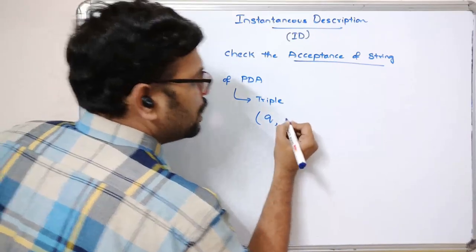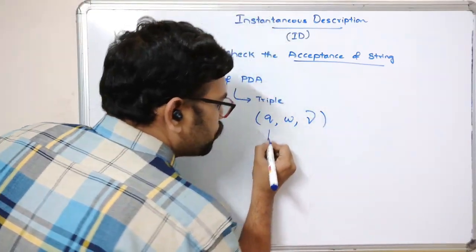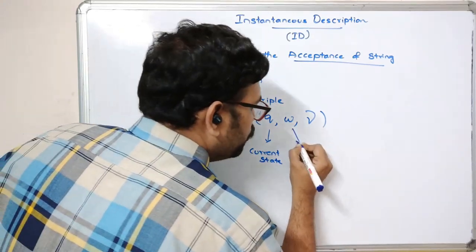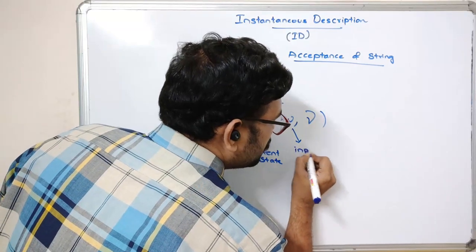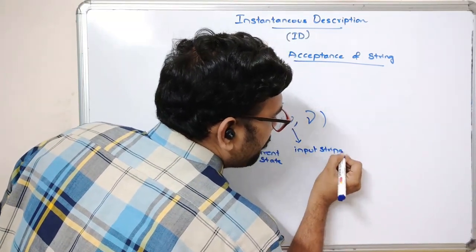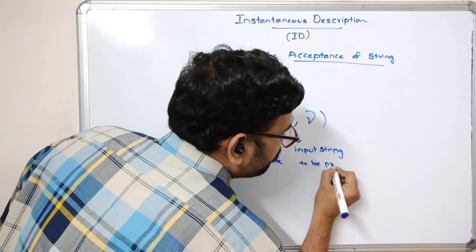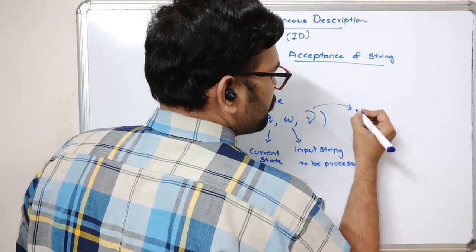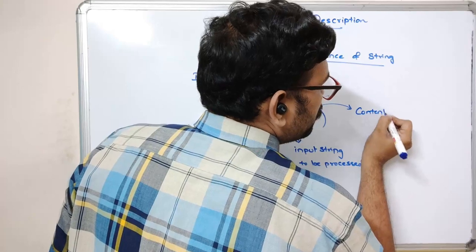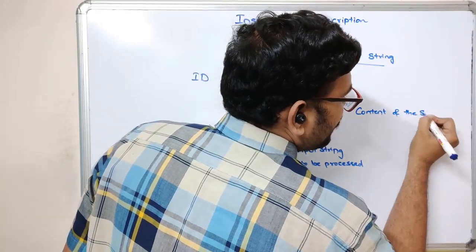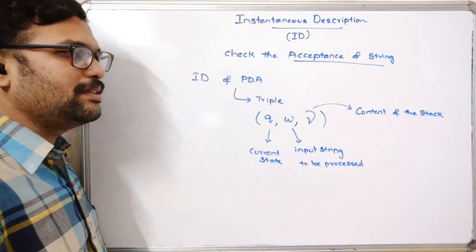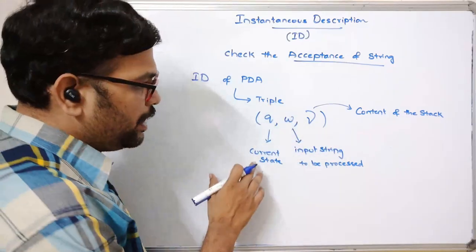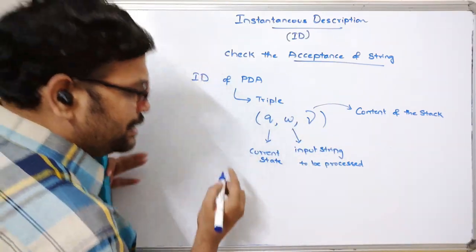The triple consists of: q — the current state; w — the input string to be processed; and gamma — the content of the stack. Whatever content is available in the stack is represented in gamma, w is the input string to be processed, and q is the current state.